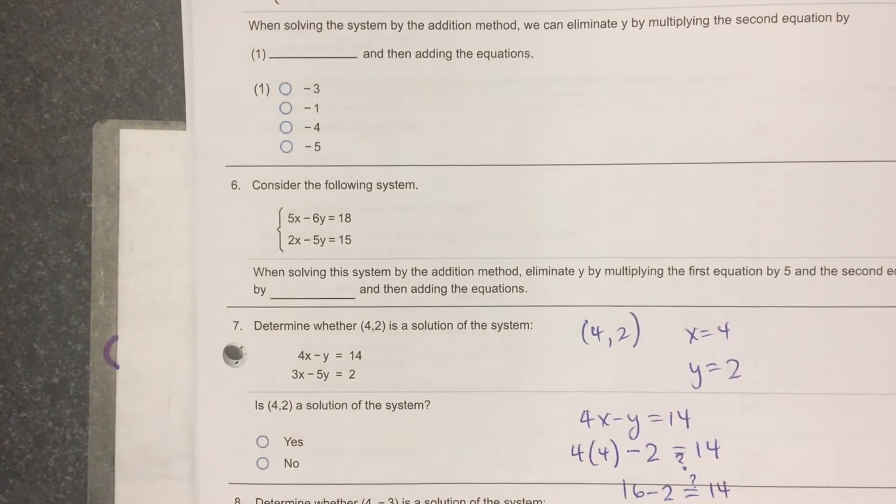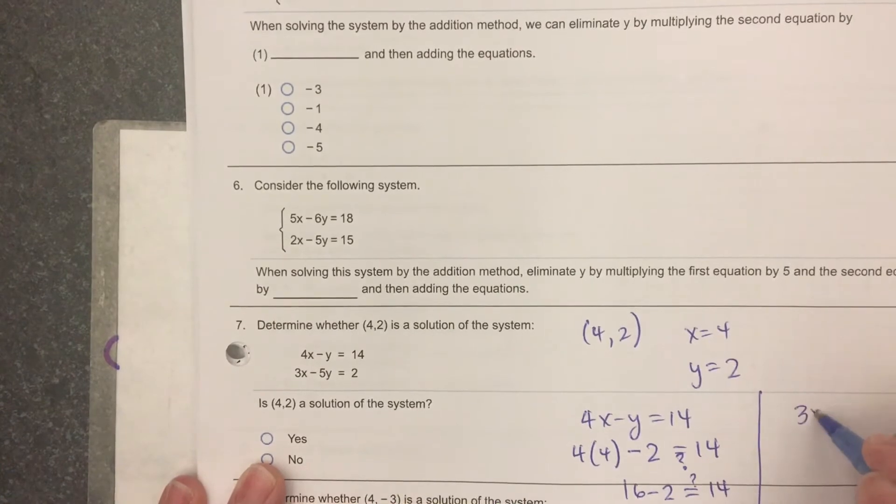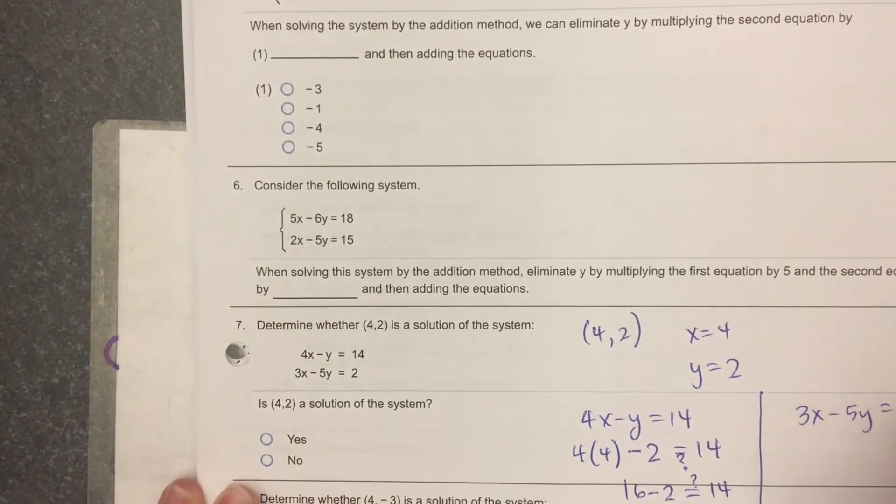Now, it's true in the first one, but it has to be true in both of them. So you have to also check the other one, which is 3x minus 5y equals 2. Is that going to be true?